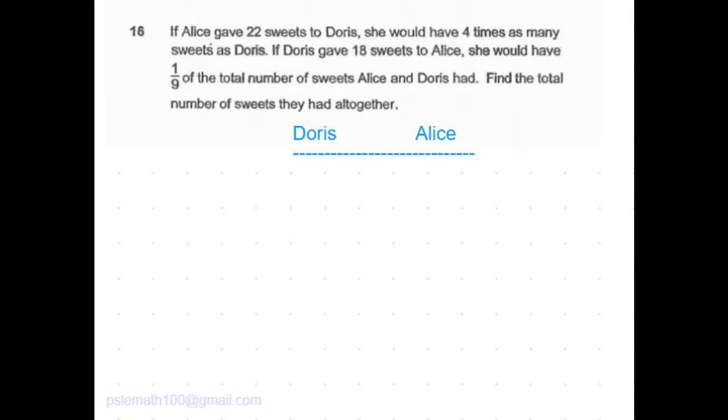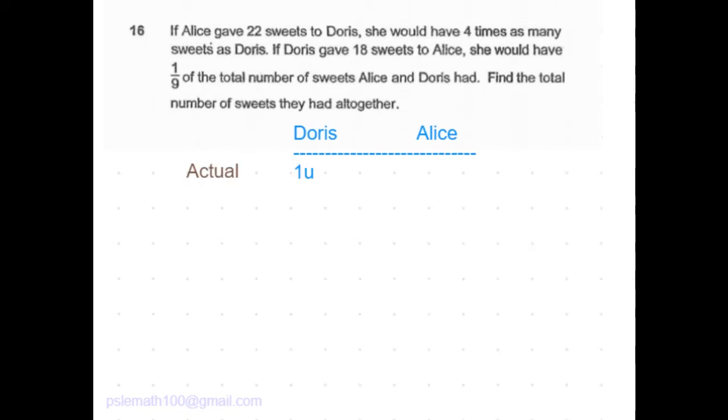Let's chart down Doris and Alice. Doris has fewer number of sweets. Let's assume Doris had one U number of sweets.